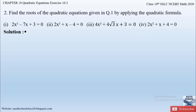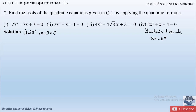Let us begin with the first part of the question, which is given as 2x² - 7x + 3 = 0. Let me write down the quadratic formula first. The quadratic formula is given by: x = (-b ± √(b² - 4ac)) / 2a.